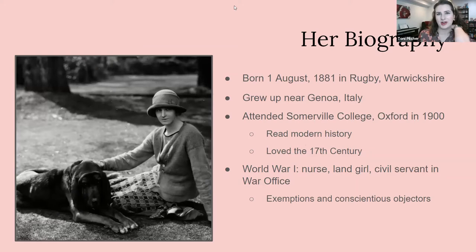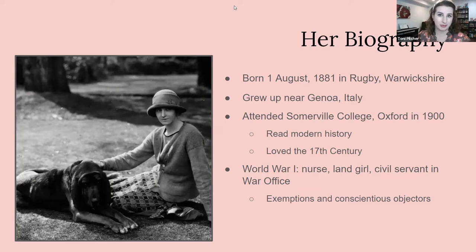She was born August 1st, 1881 in Rugby, Warwickshire, but she grew up near Genoa, Italy, and she was quite a tomboy there. She actually believed that she would grow up to be a man, so that's another theme that comes up in her writing — gender ambiguity and breaking with established norms. She then attended Somerville College, Oxford in 1900, where she read modern history and fell in love with the 17th century, which became a source of many of her books. She wrote both fiction and nonfiction about that era.